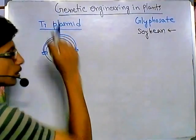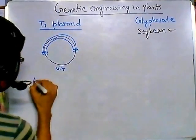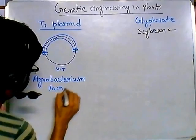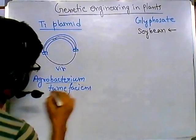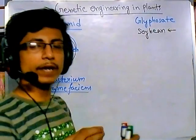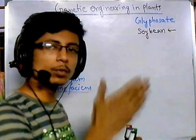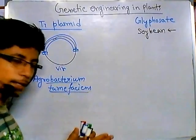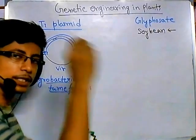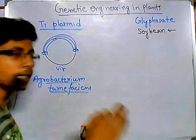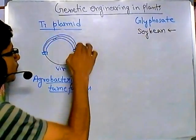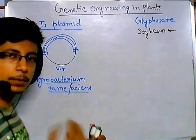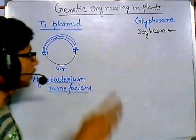This Ti plasmid is usually found in Agrobacterium tumefaciens bacteria. This bacterium infects plants by passing through wounds near the soil — it's a soil bacterium. Once it finds a wound in a plant, it grows inside the plant cell, incorporates its T-region into the plant chromosome, which is then transcribed and translated into protein products that produce certain effects in the plant.